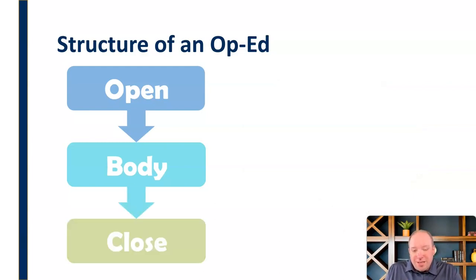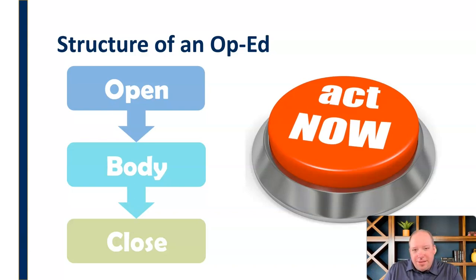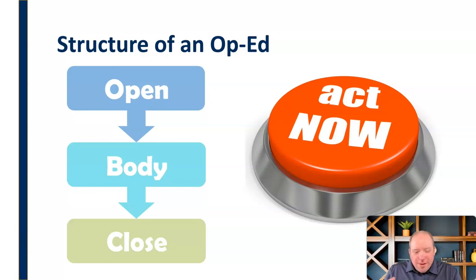Then we get to the close, which is critically important as well. In an op-ed — 750 to 800 words — you're on a very short timeline. An op-ed really is, in some ways, a sales pitch. We can't just throw information out there and hope it sticks. We've got to provide that audience with an avenue for acting now. What should they be doing? What do we want them to know, to believe, how do we want them to respond? That's our close — it's got to be quick, concise, and effective, with a very clear call to action to get the audience to act now.